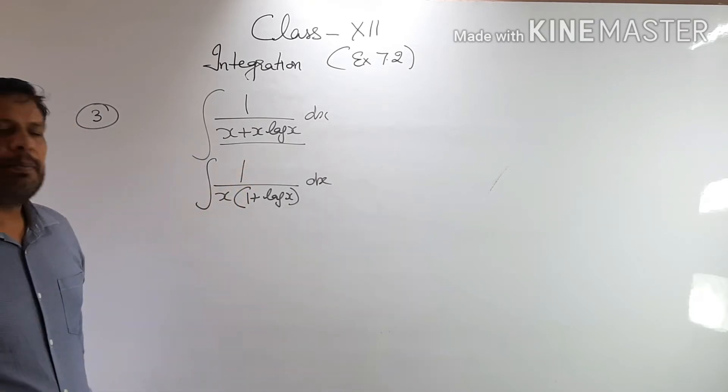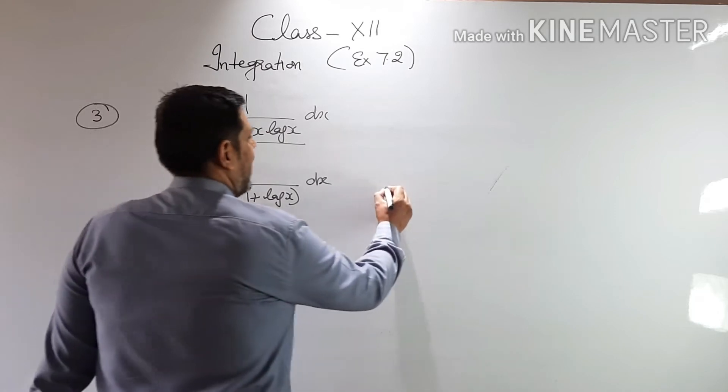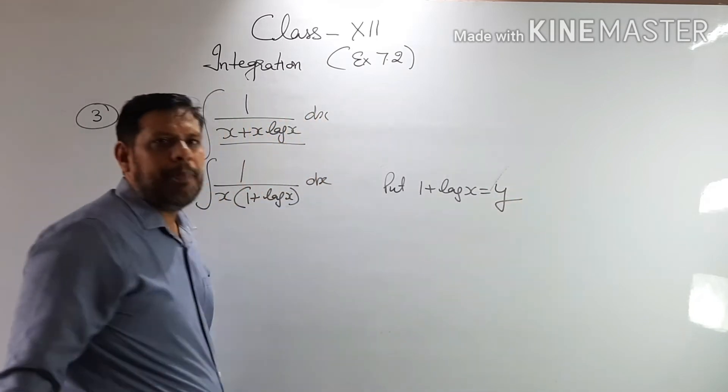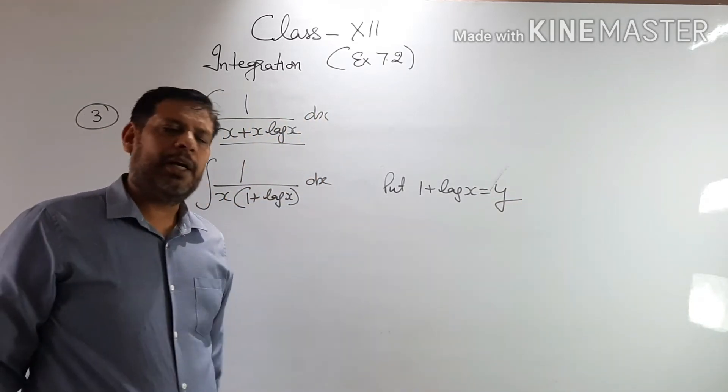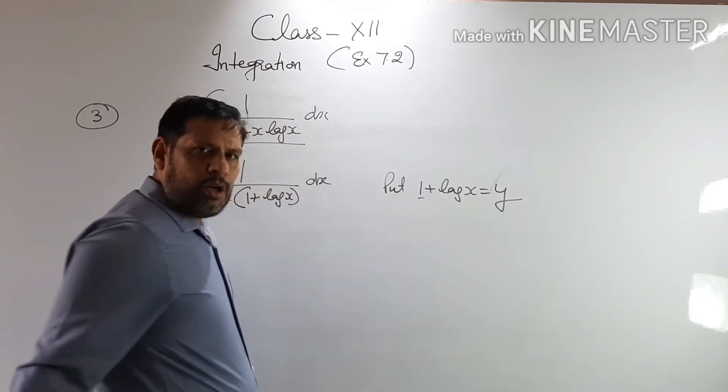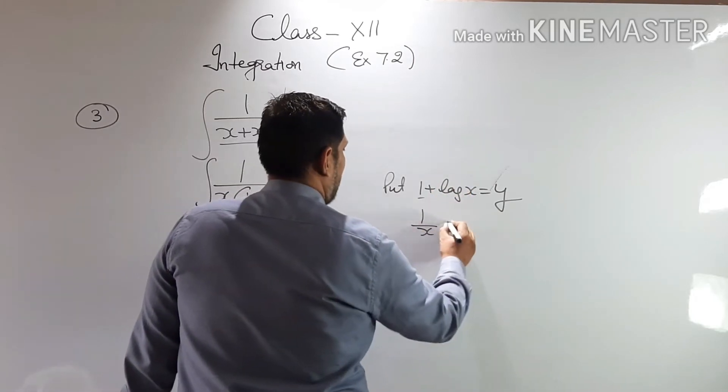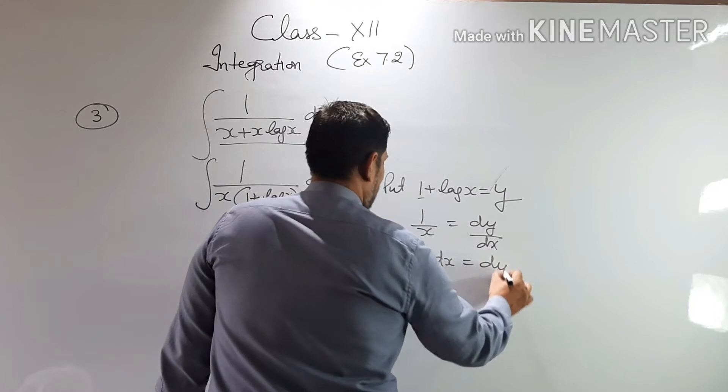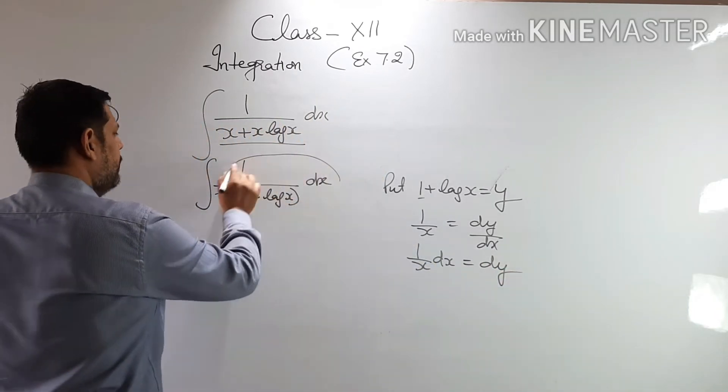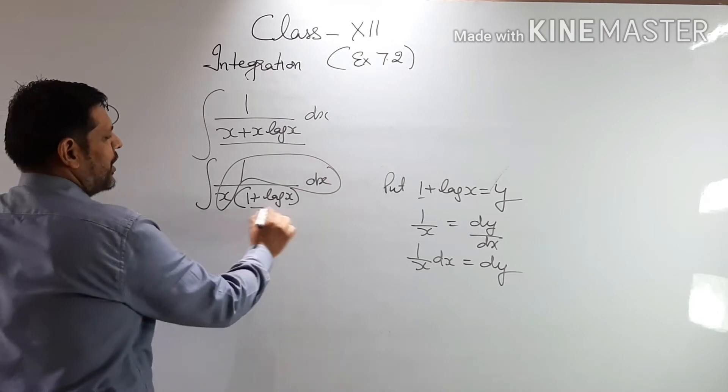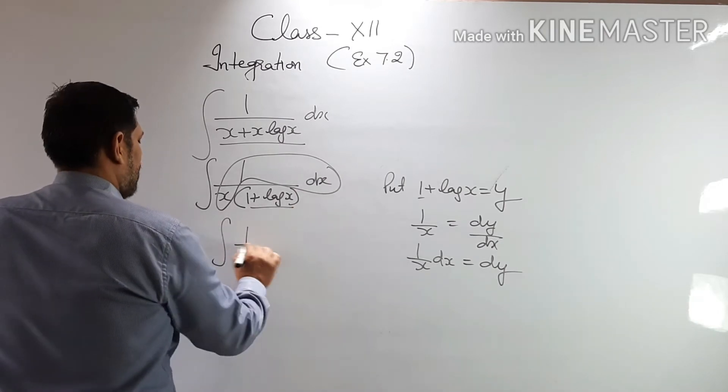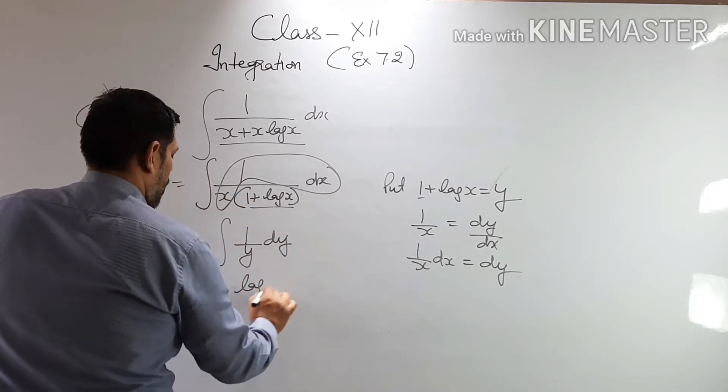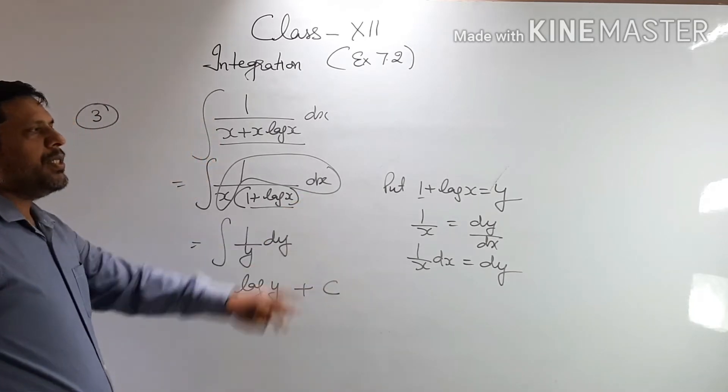So we have to find the integral. If you look carefully, in the entire denominator you can take 1 by x common. It will be 1 by x into 1 plus log x dx. Now you know that log x derivative is 1 by x and derivative of 1 is zero. So directly we'll put 1 plus log x equals y. And we'll differentiate it with respect to x. So derivative of 1 is zero, log x is 1 by x equals dy by dx. Means 1 by x dx has come as dy. So this value has become dy and this value has become y. So this has come 1 by y dy.